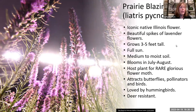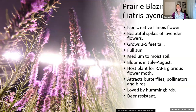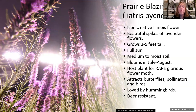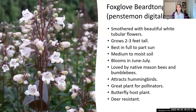Prairie blazing star is an iconic native Illinois flower. Look at those beautiful spikes — pollinators love it. It grows three to five feet tall, likes medium to moist soil, and is also a host plant that attracts tons of pollinators and beneficial insects. It's a gorgeous, joyful plant.